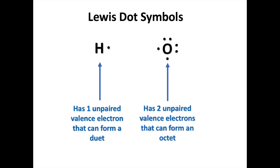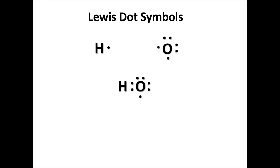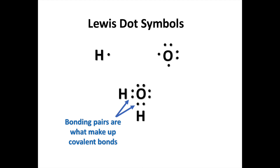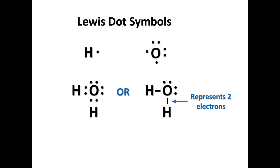Let's go ahead and do this for the formation of water, H₂O. Both hydrogen atoms have one valence electron, and oxygen has six valence electrons. The oxygen will share an electron with each hydrogen atom, forming an octet with respect to oxygen, and each hydrogen atom will form a duet. So in this structure, there are two bonding pairs and two lone pairs. When each atom shares one electron, this is a single covalent bond. Another way to write a Lewis structure is to represent a covalent bond as a dash, but keep in mind that one dash always represents two electrons.